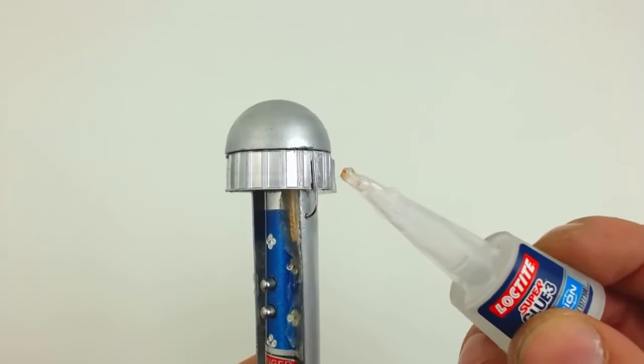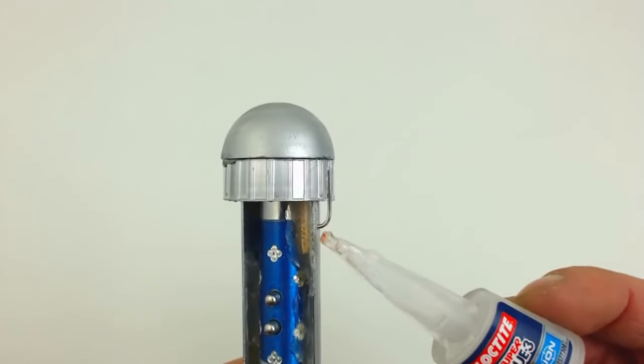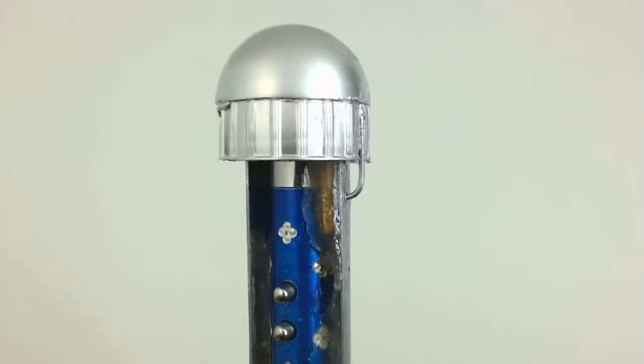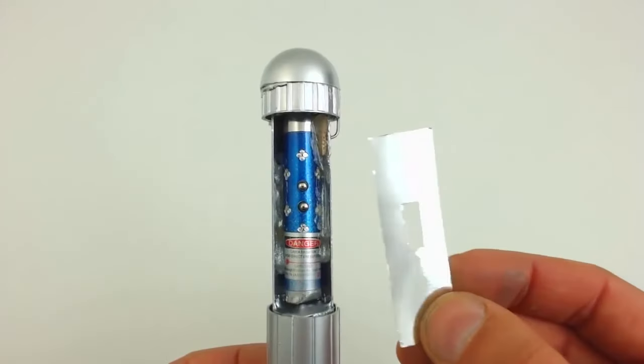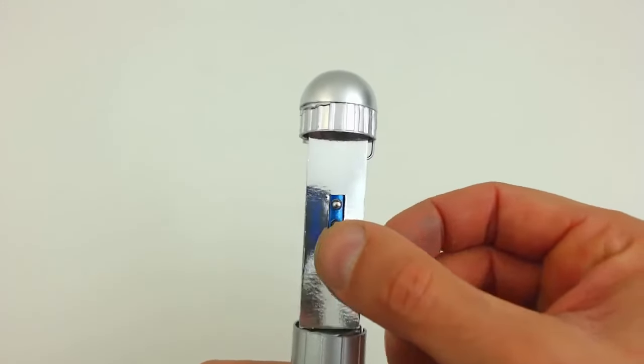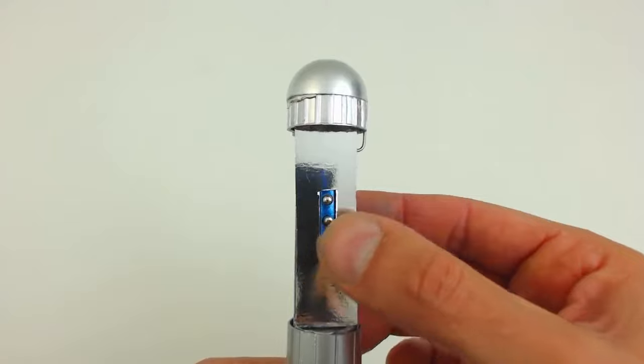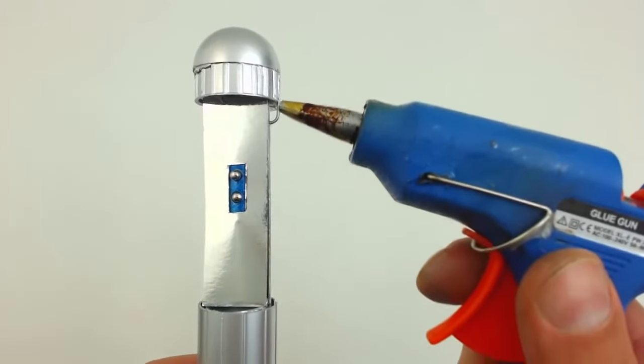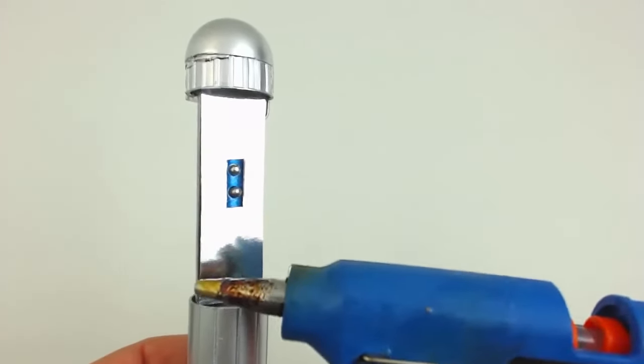Now we apply instant glue on outside. And this is how it should look like. We now have to glue the piece of metallic poster board as shown in the video. This is how it should look like.